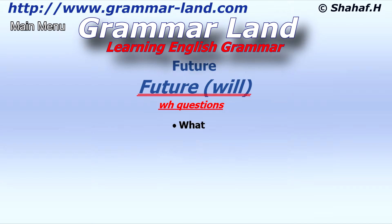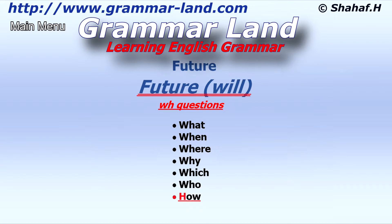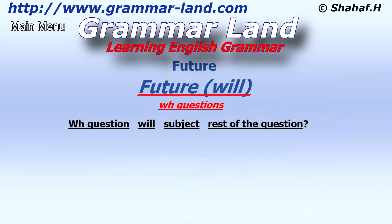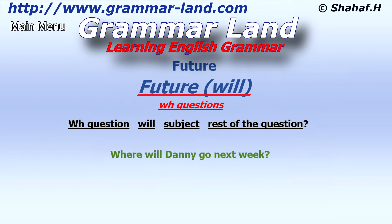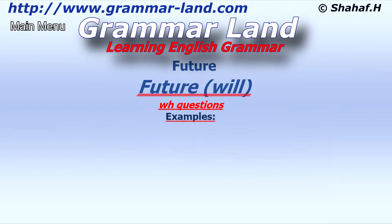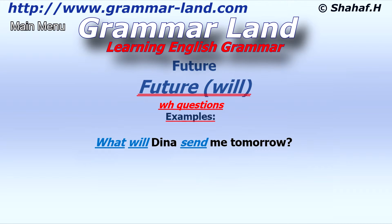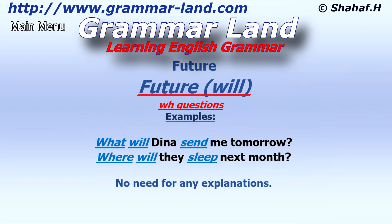WH questions — let me list some of them: what, when, where, why, which, who, how. 'How' doesn't start with WH but is also a WH question. The question will always start with a WH question word, followed by 'will,' then the subject, followed by the rest of the question. For example: 'Where will Danny go next week?' More examples: 'What will Dina send me tomorrow?' 'Where will they sleep next month?'